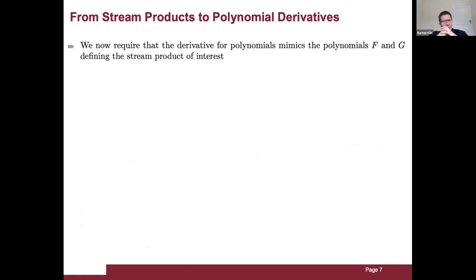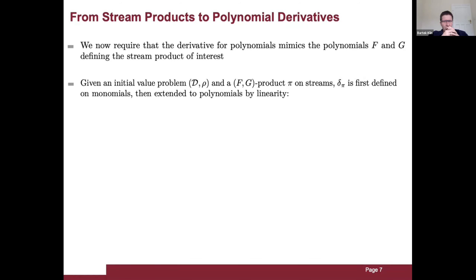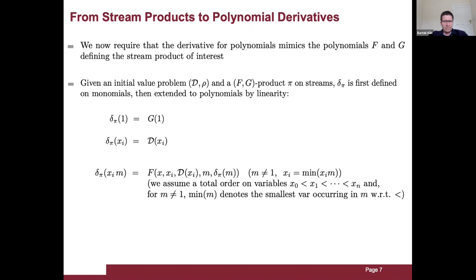We require that the derivative for polynomials mimics the polynomials F and G defined for the considered stream product. Given an initial value problem and an FG product pi, we define the derivative for polynomials associated to pi inductively on monomials and then extend it to polynomials by linearity. The derivative of 1 is G of 1, and the derivative of a single variable xi is the derivative of xi as specified in the initial value problem.